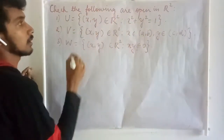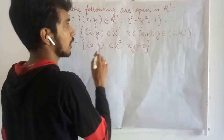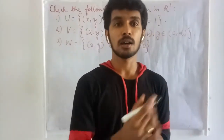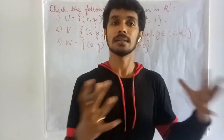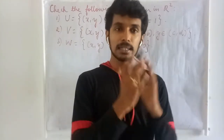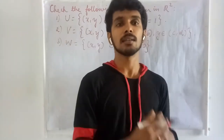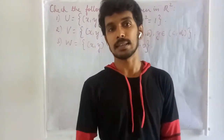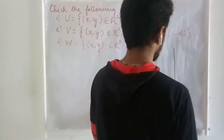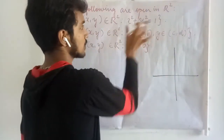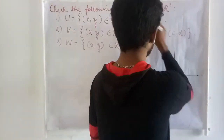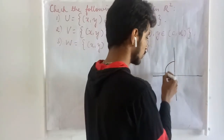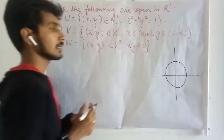In the first example, it is given that the set is the collection of points in R² such that x² + y² = 1. When given something in R or R², we may try to plot it and see what is happening. Since it is given in R², let us plot what is exactly happening. The set x² + y² = 1 is the circle with center at the origin and radius 1.